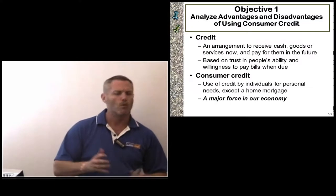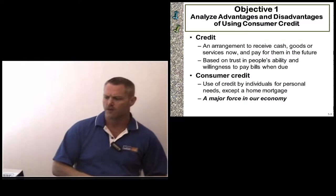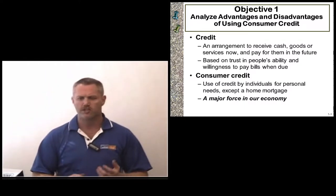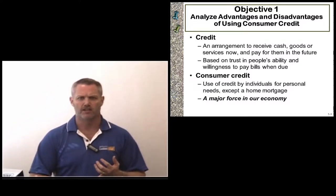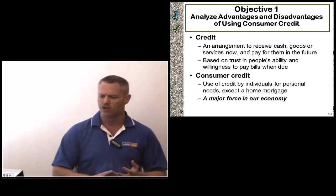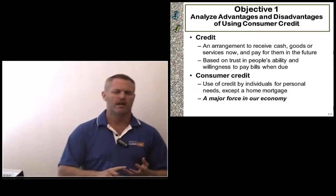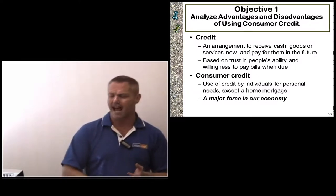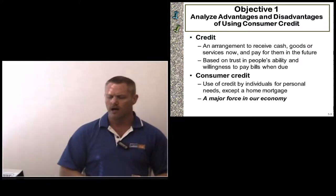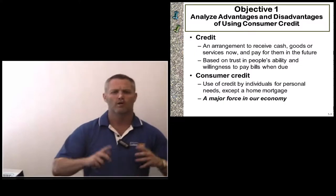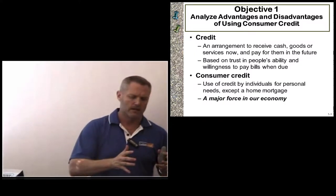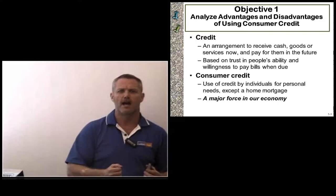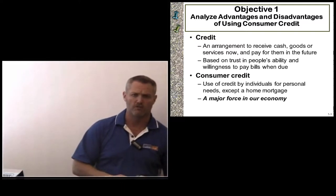So first, what is credit? Credit is an arrangement to receive cash, like a cash advance on your credit card, goods such as a T-shirt, a jacket, a burrito, or services like airline tickets, car repair, or anything like that. And as we know, you get those items now and you pay for them later.